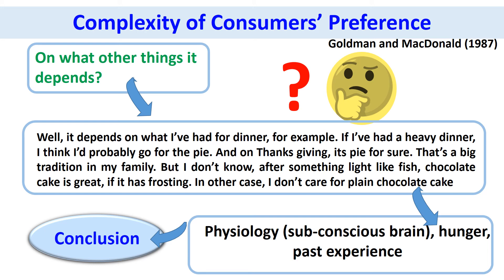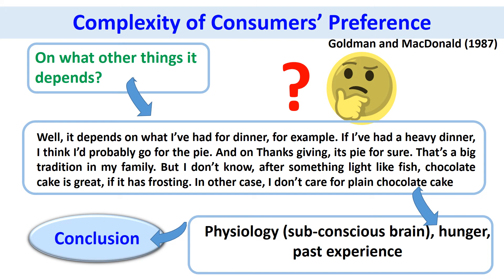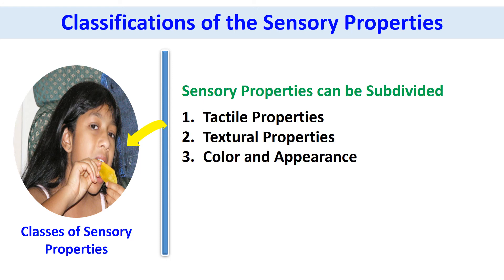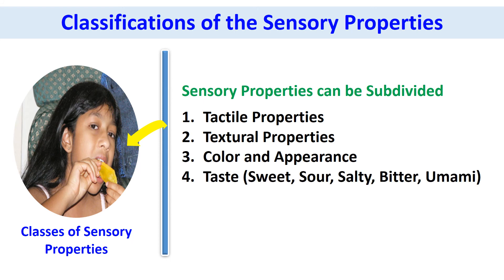This explains the complex process of sensory perception, liking — that is hedonic — and acceptance of a food. Sensory properties can be divided into tactile properties, textural properties, color and appearance, taste, odor, and sound.